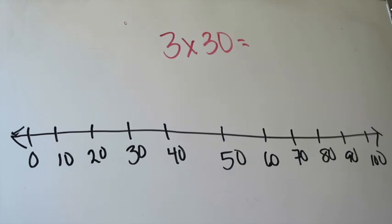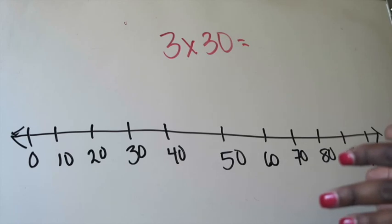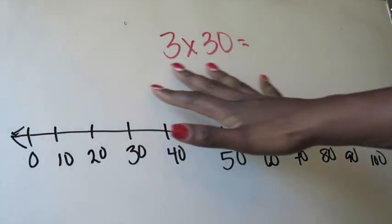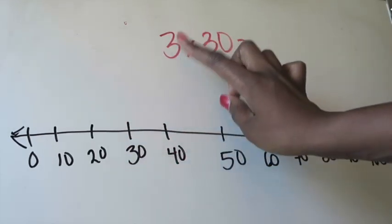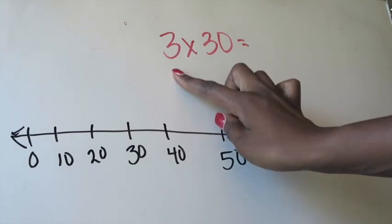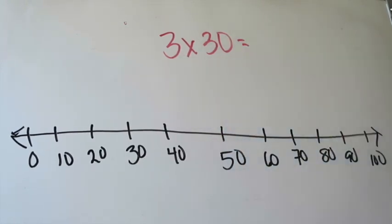All right. Now we have the same problem, 3 times 30, but this time instead of modeling it, I'm choosing to use a number line. So the first thing that you want to recognize when using a number line is how to interpret what the problem means you're going to do in relationship to a number line. So this means I need to make three jumps of 30 on my number line.